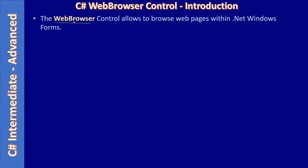The Web Browser control allows browsing web pages within .NET Windows Forms — that means you place this control inside a Windows Form. The control can then navigate to a page URL, retrieve the content from the page URL in the form of HTML, and render it. Since it's a control, it can be placed inside .NET Windows Forms, allowing you to browse web pages within the application.